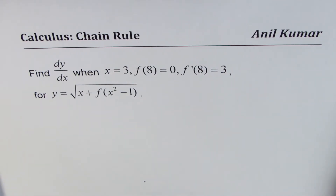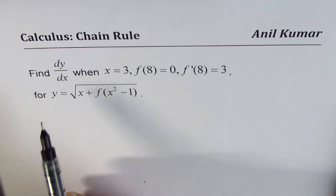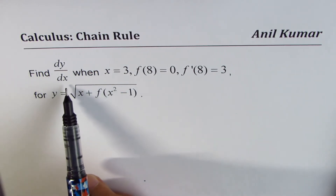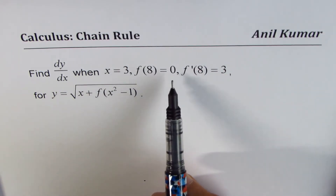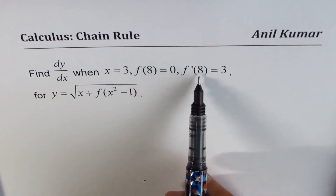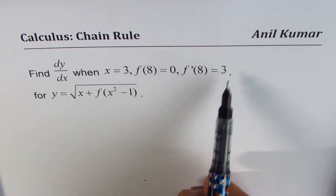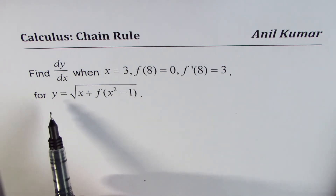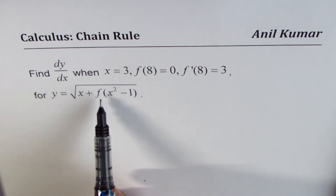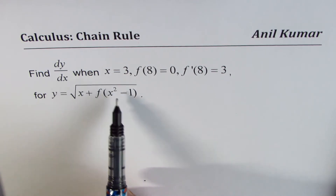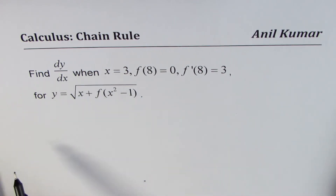I'm Anil Kumar sharing with you some interesting questions on the application of the chain rule. The question is: find dy/dx when x equals 3, given that f(8) equals 0 and the derivative of the function at 8 is 3. The function is y equals the square root of x plus f(x² − 1).